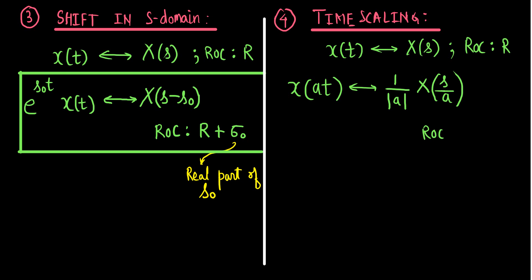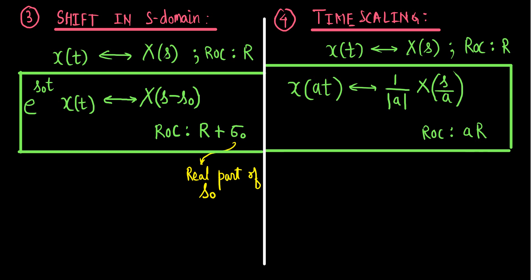The ROC for the time-scaled signal is a·R. So from this property, if a signal has Laplace transform X(s) with ROC R, then the scaled version of the input gives a scaled version of the Laplace transform, and the region of convergence is scaled by the same factor a. That is the property of time scaling.